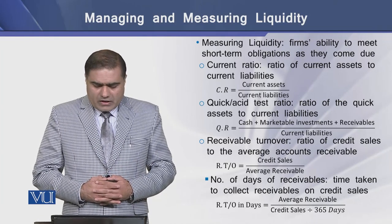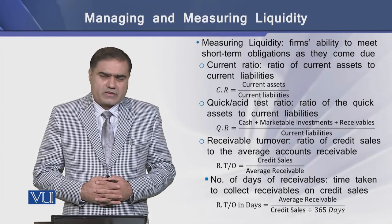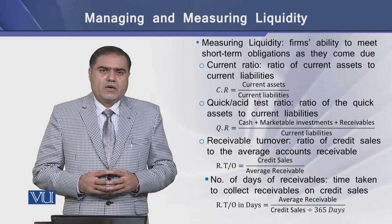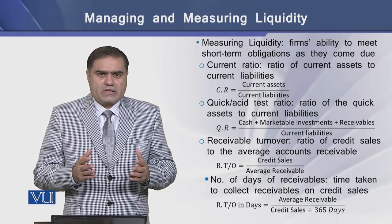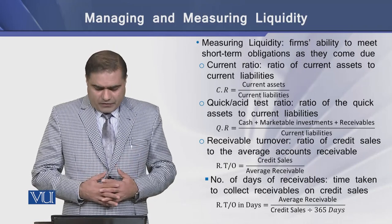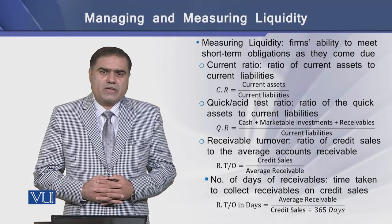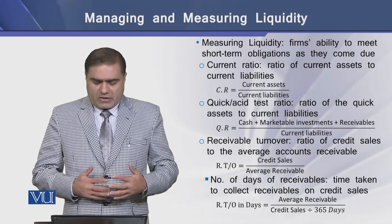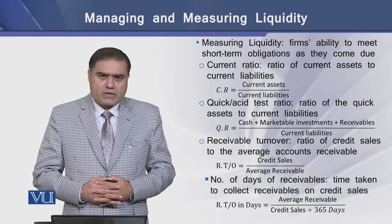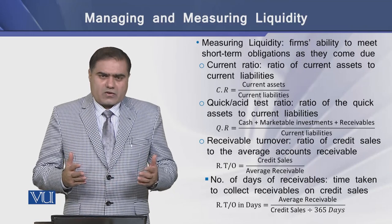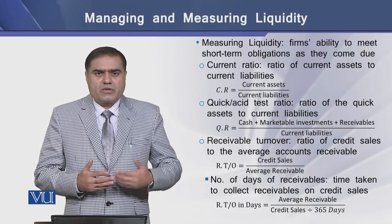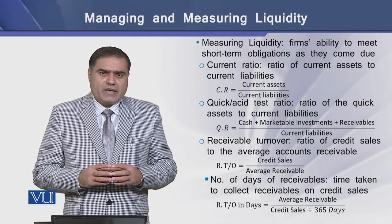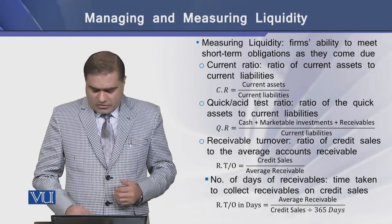The second ratio is the quick or acid test ratio. This is the ratio of quick assets in relation to the current liabilities of the firm, and an acceptable standard for a general level of business is believed to be equal to one. The third is the receivables turnover ratio, which tells how quickly the firm converts its sales into receivables. The average receivable turnover ratio, or average collection period, tells how quickly a firm gets its receivables converted into cash.